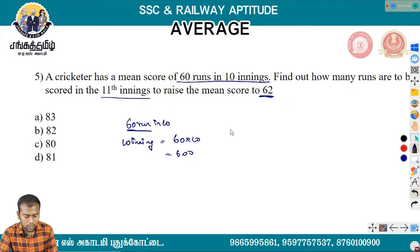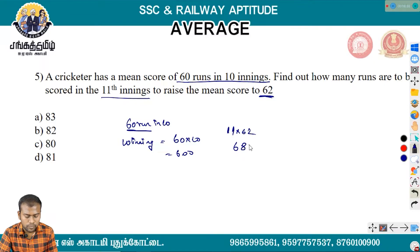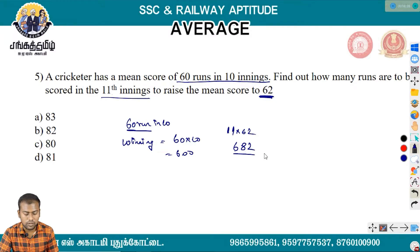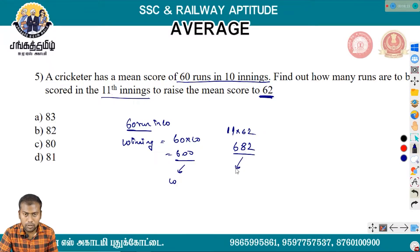In 11 innings the required average is 62. So the total needed is 11 into 62, which equals 682. In 10 innings the current total is 600. Therefore the 11th innings score required is 682 minus 600.